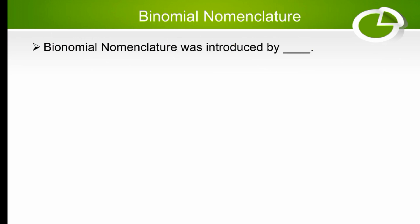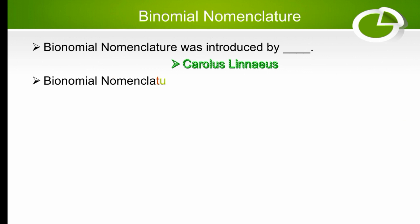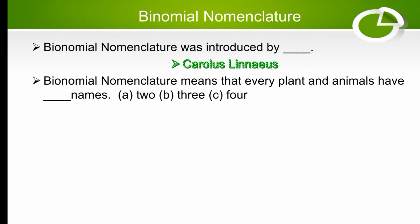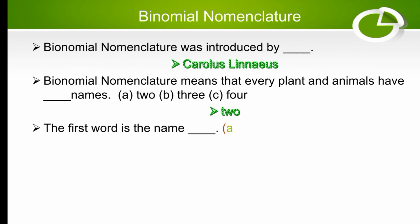Binomial nomenclature was introduced by Carlos Linnaeus. Binomial nomenclature means that every plant and animal has two names — binomial means two, so the right option is two. The first word is the name of the genus.